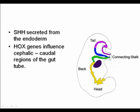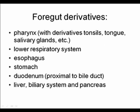When we talk about the foregut and its derivatives, we include everything from the pharynx — including the tonsils, back of the tongue, and salivary glands — through the lower respiratory system, esophagus, stomach, and the first part and part of the second part of the duodenum up to where the bile duct enters. Also included are the liver, biliary system, and the pancreas.